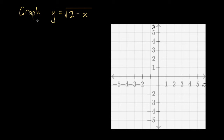Here we're asked to graph y equals the square root of 2 minus x. We're going to go about this by drawing up a table of values, plotting them, and then connecting them in a way that forms the function.